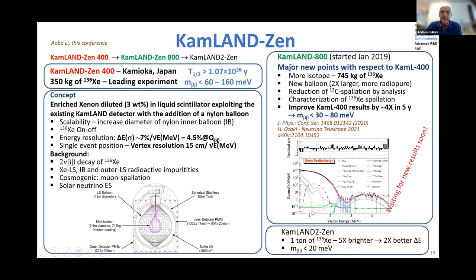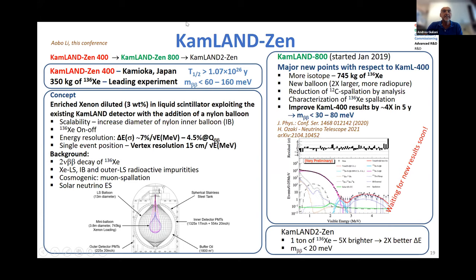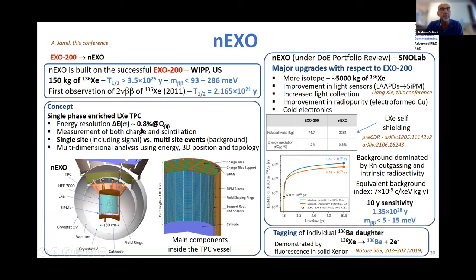No new results from KamLAND-Zen for this TAUPE conference — the results shown are still from TAUPE 2019, but new results are expected soon. A possible follow-up is KamLAND2-Zen, with total isotope mass increased to one ton and total light emission increased by a factor of five to improve energy resolution by a factor of two — very important for reducing the two-neutrino background. Moving to the EXO/nEXO line: nEXO is built on the successful EXO-200 experiment, which provided the first observation of two-neutrino double beta decay of xenon-136.